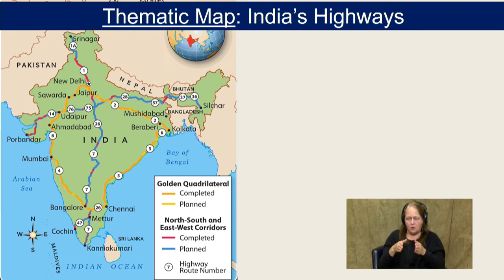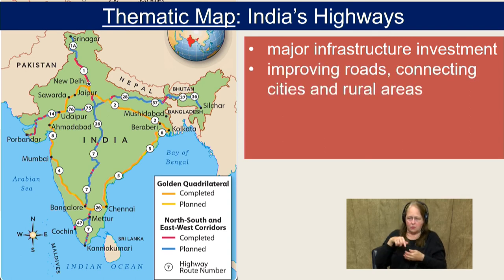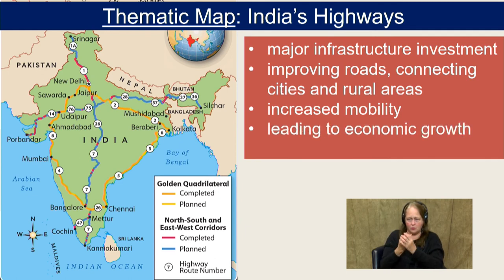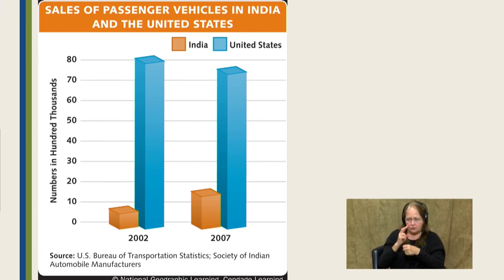India invested major money in an infrastructure project called the Golden Quadrilateral — a highway system similar to our own interstate system — connecting the major cities in India to improve roads and connectivity between cities and rural areas. This has led to increased mobility and economic growth throughout the country. A graphic shows that from 2002 to 2007, car buying in the United States went down while car buying in India actually doubled, telling you something about their growing and crowded conditions.